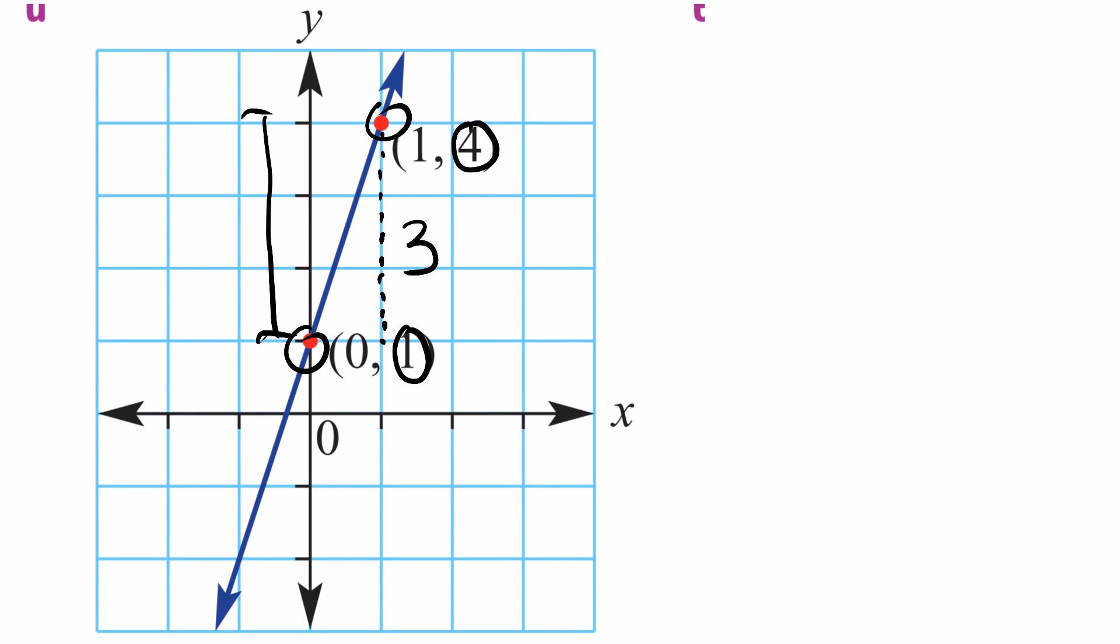So we can measure our rise as 3. We come across from the other point that we've chosen horizontally and meet up with our vertical line to measure our change in x-axis. So we know that the value here for our first point along the x-axis is 0, and the value for our second point along the x-axis is 1. So we know that the amount of spaces we have travelled from the first point to the second point along the x-axis is 1. Therefore, we can determine that our rise equals 3 and our run equals 1.